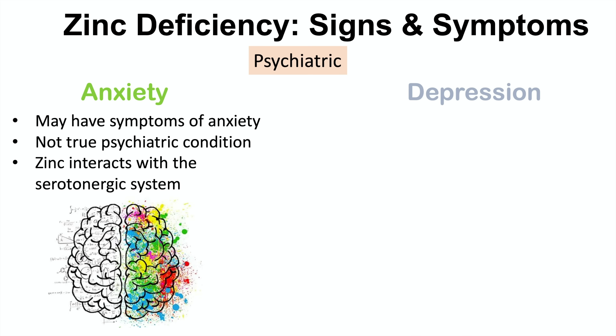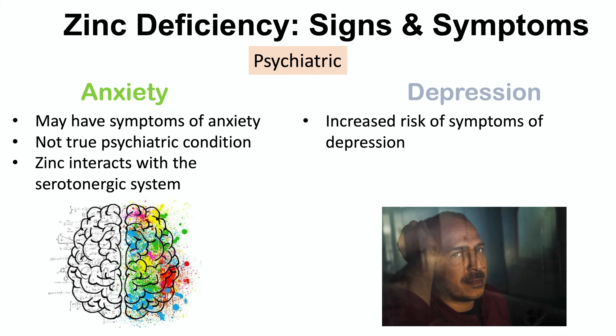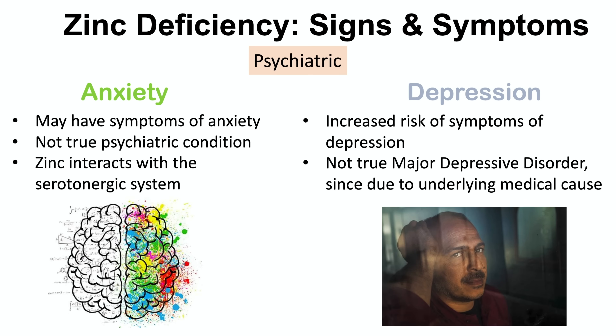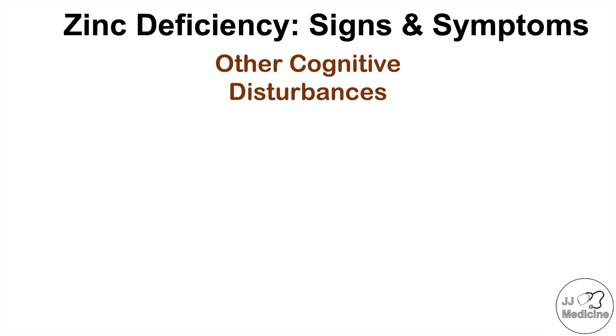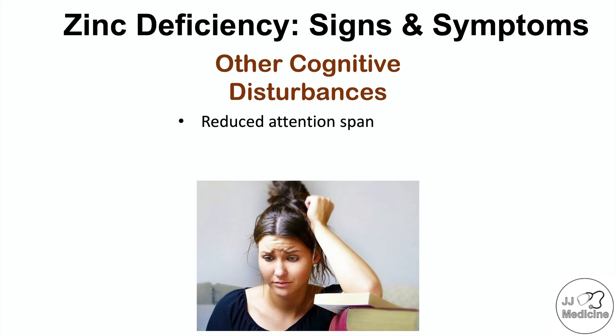Depression is also associated with zinc deficiency — patients may show signs and symptoms resembling major depressive disorder, but it is not a true case of MDD because it is due to an underlying medical cause. This is again related to zinc's interaction with the serotonergic system. Zinc deficiency can also cause other cognitive disturbances, including reduced attention span and difficulty concentrating.